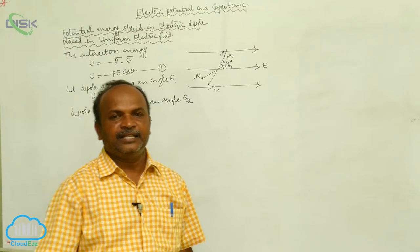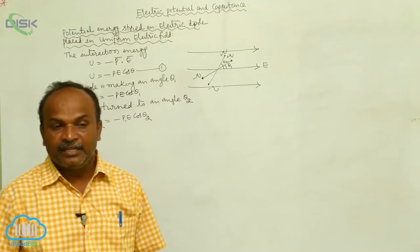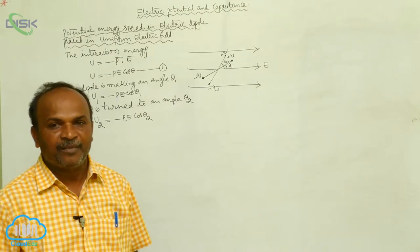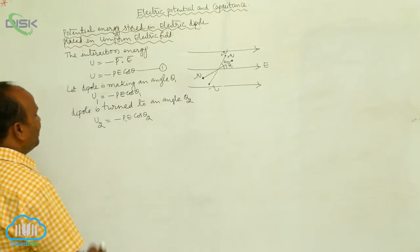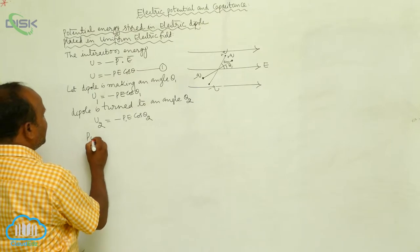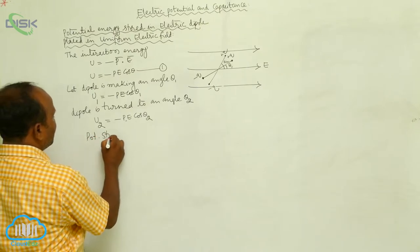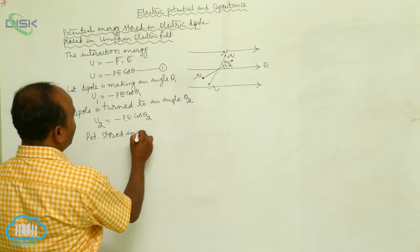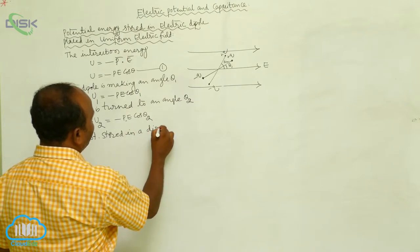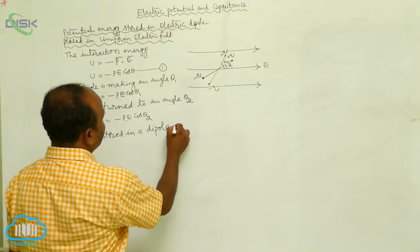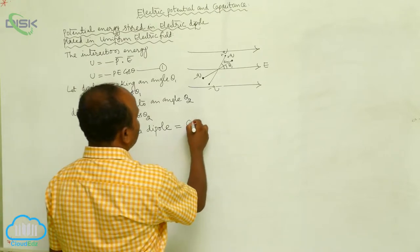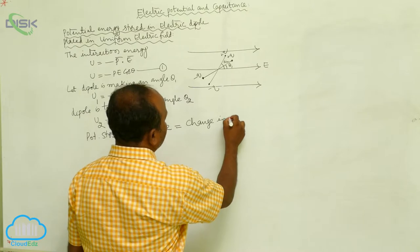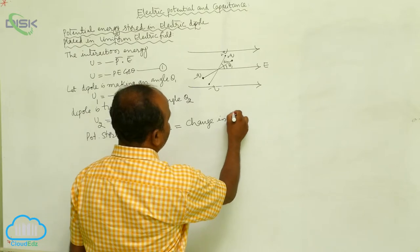As the interaction energy is changed, that change in interaction energy is stored in the form of potential energy. The potential energy stored in a dipole equals the change in interaction energy.